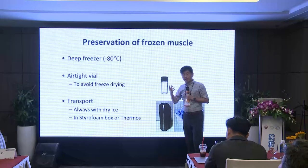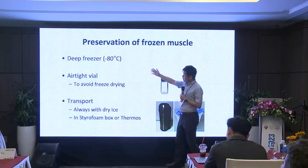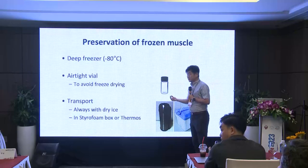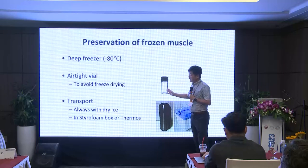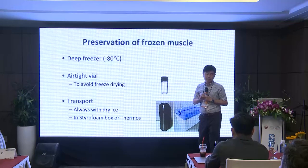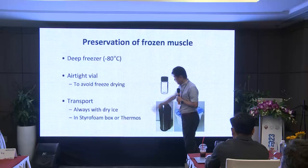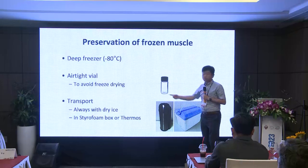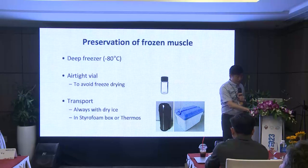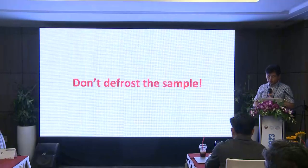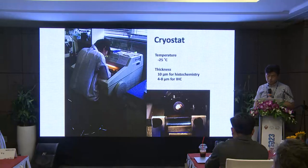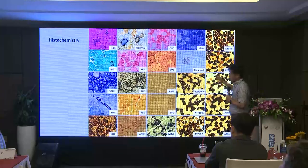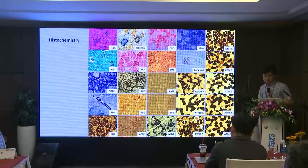Once frozen, the sample should never ever be defrosted. You have to keep it in a deep freezer at minus 80 degrees. When you put the sample into the deep freezer, it should be in an airtight vial — otherwise the sample will freeze-dry. For transportation, you always have to use dry ice; otherwise it will defrost. We make sections by cryostat, then do a variety of histochemical stains.